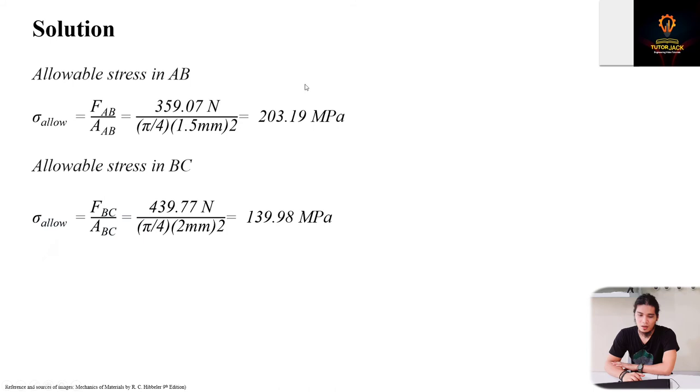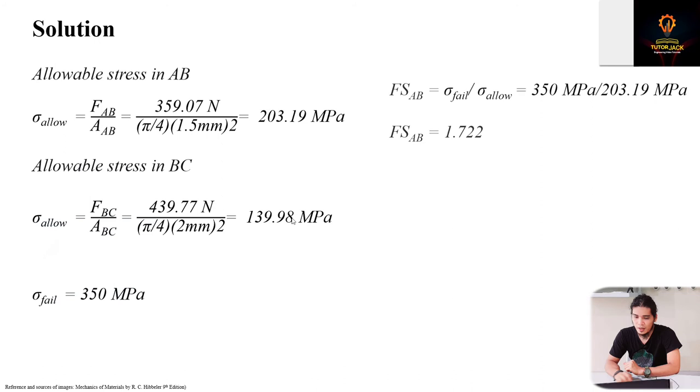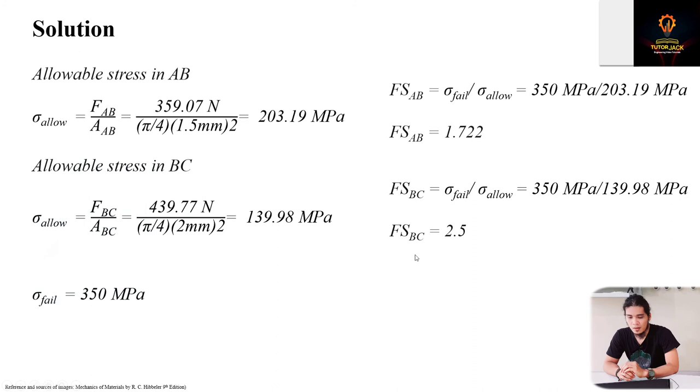The equation for factor of safety is the ratio of stress fail divided by stress allowable. We have both - the given fail stress and two computed allowable stresses, so we can get the factor of safety for each wire. For AB: stress fail is 350 divided by allowable 203.19 megapascals gives a factor of safety of 1.722. For BC: 350 divided by the computed allowable stress 139.98 megapascals gives a factor of safety of 2.5. BC has a larger factor of safety compared to AB.